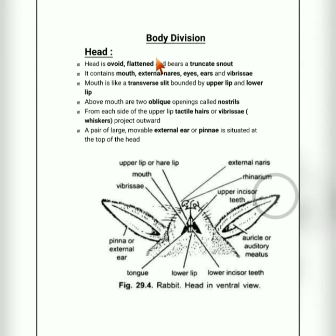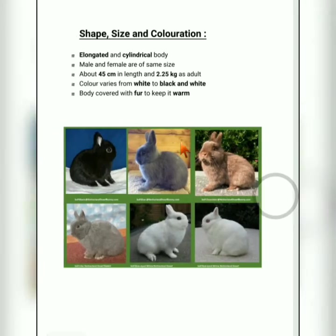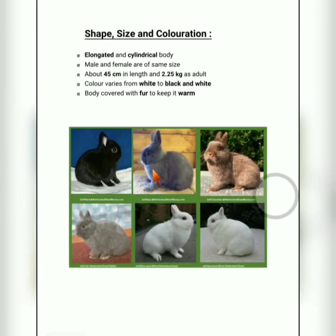The body is divided into four parts: first is the head, second is the neck, third is the trunk, and fourth is the tail. The head is ovoid — that is, more or less oval or egg-shaped.